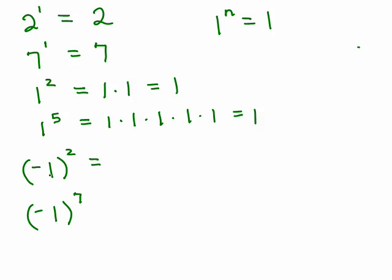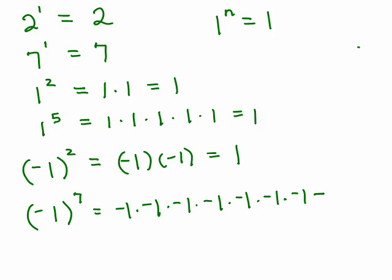All right, negative 1 squared. The base here is negative 1, so I have a negative 1 times a negative 1, which is 1. And the last one, I'm going to have 7 negative 1's. So 1, 2, 3, 4, 5, 6, 7 of them. So I've got 7 negative signs, so the answer is going to be negative. But when I keep multiplying by 1 times itself over and over again, I'm going to get 1.